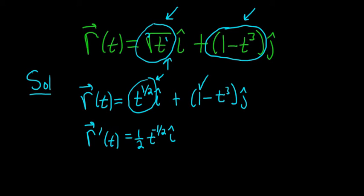The derivative here is 0, because 1 is a constant. Here again we use the power rule. So we get minus, bring down the 3, t, and then 3 minus 1 is 2, j hat.